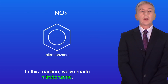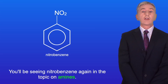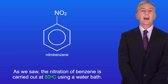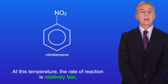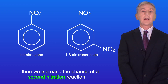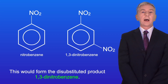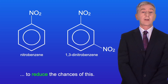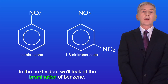So in this reaction we've made nitrobenzene, and you'll see nitrobenzene again in the topic on amines. The nitration of benzene is carried out at 50 degrees Celsius using a water bath — at this temperature the rate of reaction is relatively fast. However, if we use higher temperatures, we increase the chance of a second nitration reaction, which would form the di-substituted product 1,3-dinitrobenzene. So it's important to keep the temperature at 50 degrees Celsius to reduce the chances of this. In the next video we look at the bromination of benzene.